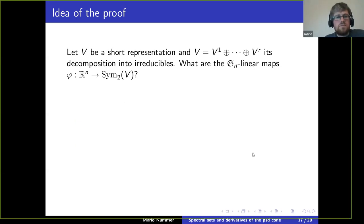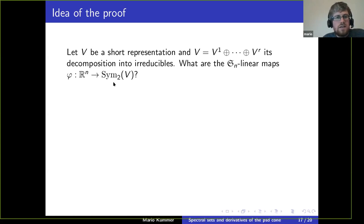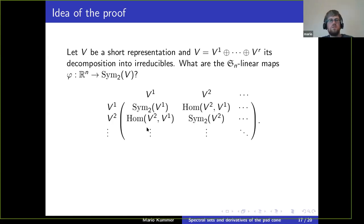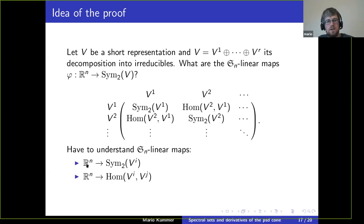So if we have a short representation V, we decompose it into irreducibles and replace each by the corresponding irreducible representation of O(n) that we get in this manner. We also need to replace our map φ by an O(n)-linear map. For this, we have to understand what kinds of maps we can have from R^n to the space of symmetric bilinear forms on a short representation.